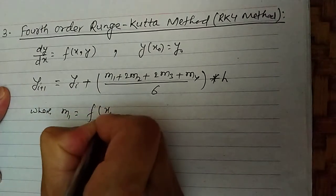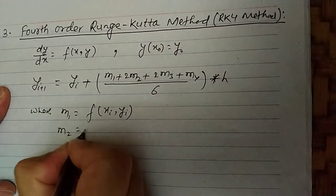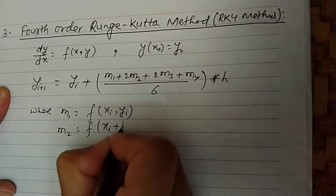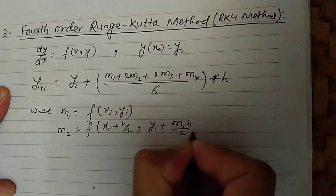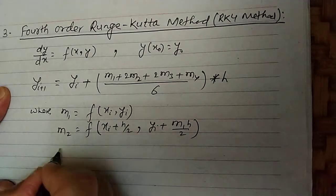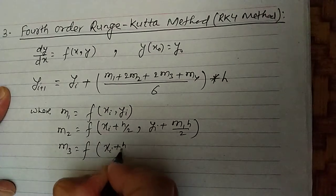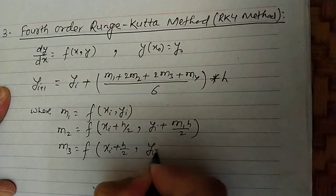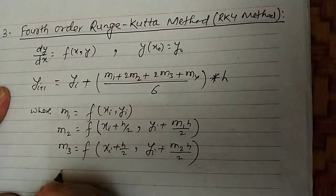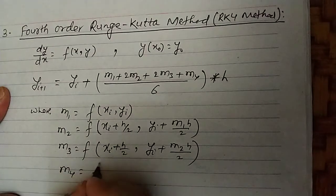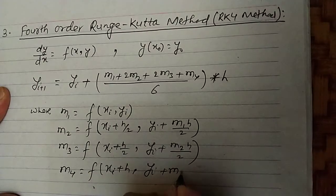Where m1 equals f(xi, yi); m2 equals f(xi + h/2, yi + m1·h/2); m3 equals f(xi + h/2, yi + m2·h/2); and m4 equals f(xi + h, yi + m3·h).